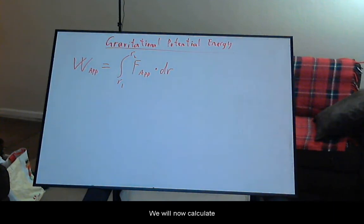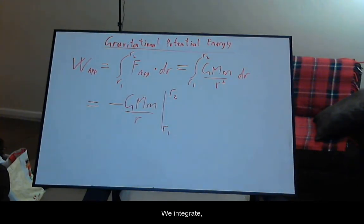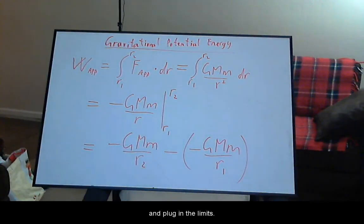We will now calculate the work done by the applied force from r1 to r2 through the dot product with the differential radius. With the dot product, only radial distance will matter, not any tangential displacement. We integrate and plug in the limits.